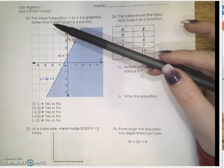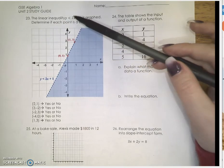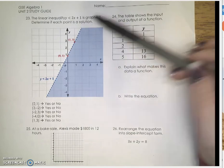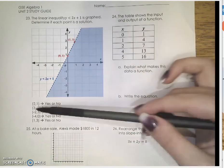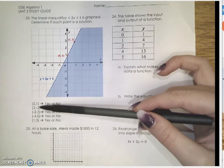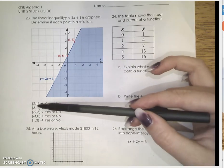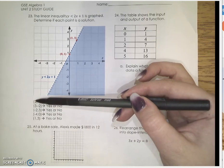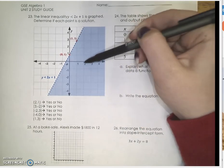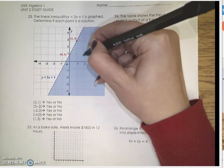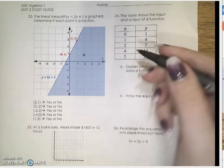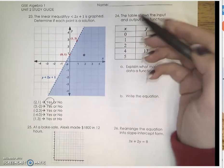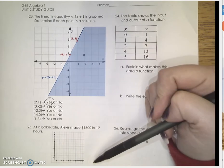Number 23 says that the linear inequality y is less than 2x plus 1 is graphed. Determine if each point is a solution. So they give us a list of 5 points, and we need to determine if each one of these points is a solution. So I'm going to plot each one of these points. 2, 1, I go over 2, up 1. That point is in the shaded area, so that is a point that would satisfy this inequality.